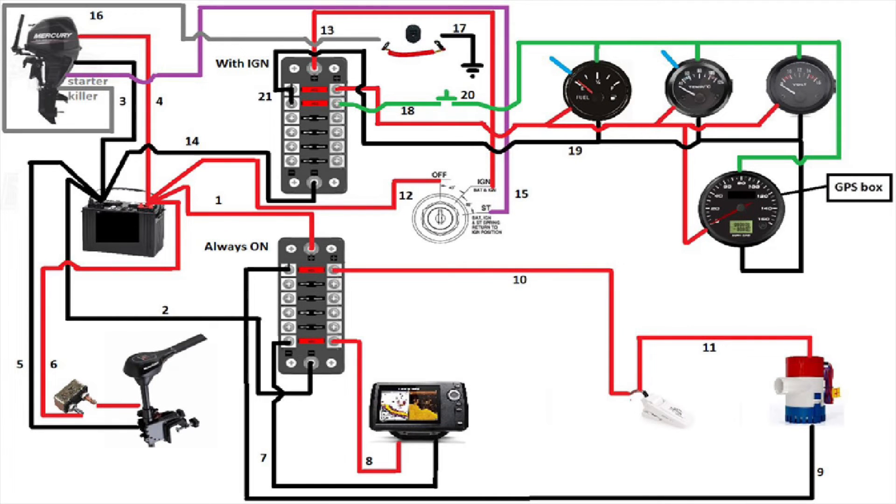Now we'll connect the gauge lights. It's the green line in the drawing. You can add a switch so you can turn them on or off as you like. It will be grounded with the ground gauge.